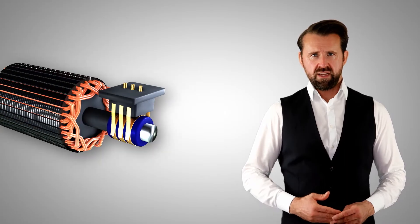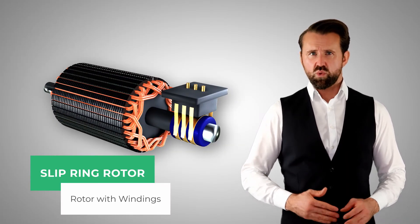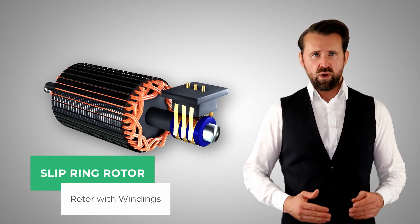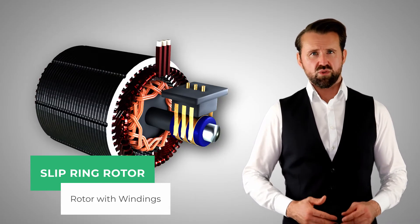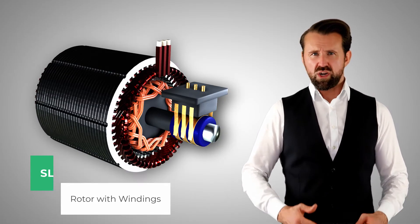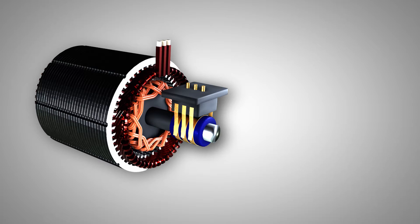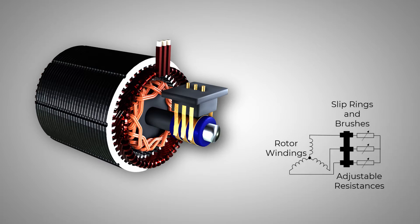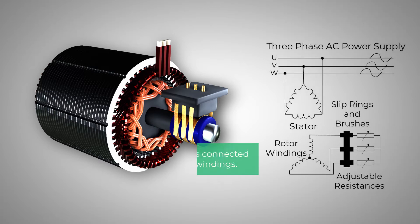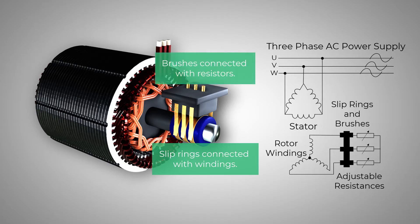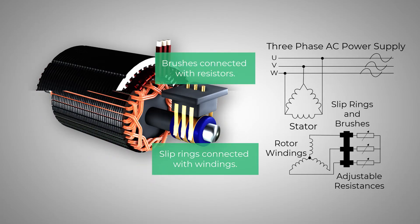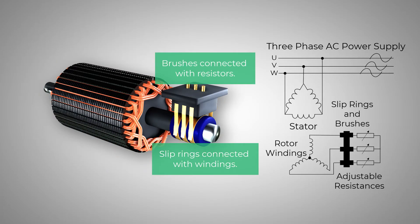The second type of induction motor is a slip ring rotor. Instead of a short circuit cage, the rotor has windings. The windings in the rotor are connected to three slip rings on which brushes grind. The brushes make contact with variable resistors which are located outside of the rotor. The current in the rotor can be adjusted via the resistors, and therefore the torque can be controlled.